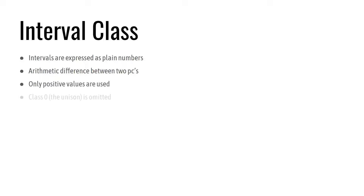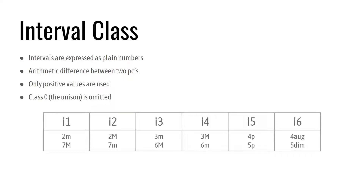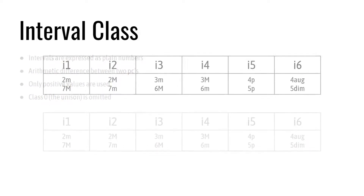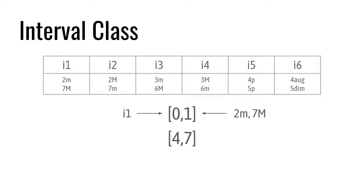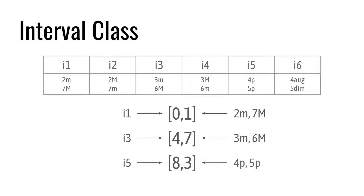Interval classes are denoted using the prefix i, followed by a number. Therefore, the interval class between PCs 0 and 1, C and C sharp, is i1, because both notes form either a minor second or a major seventh. The one between PCs 4 and 7, E and G, is i3, because they define a minor third or a major sixth. And the one between PCs 8 and 3, A-flat and E-flat, is i5, because we can say they define either a perfect fourth or a perfect fifth.